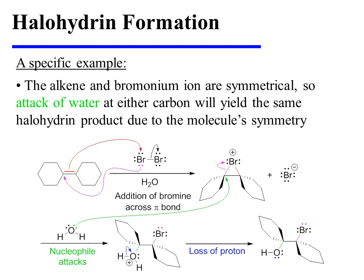In this specific example, the alkene substrate is symmetrical. The reaction begins with the attack of the alkene pi bond on one of the two bromine atoms, displacing bromide. The bromine being added across the pi bond also attacks the carbon of the alkene that would otherwise have lost a bond, forming the cyclic bromonium ion, which is also symmetrical. So in this specific instance, it does not matter which carbon of the bromonium ion is attacked by water — attack at either center will yield the same product due to the molecule's symmetry. When the bromonium ion is opened by the attack of water, an oxonium ion results, and the oxonium ion simply sheds a proton to yield the halohydrin product.